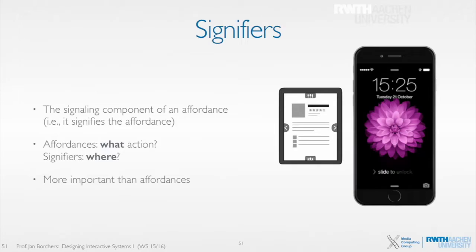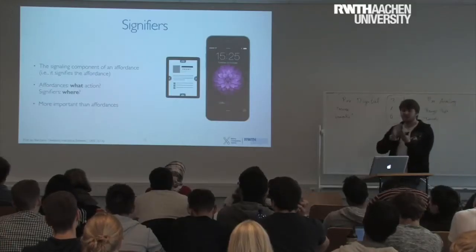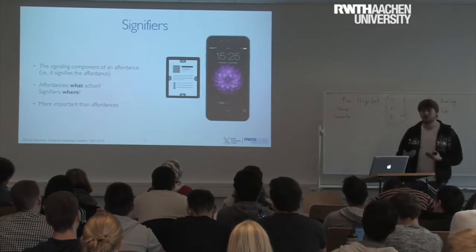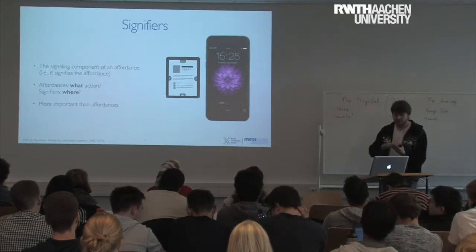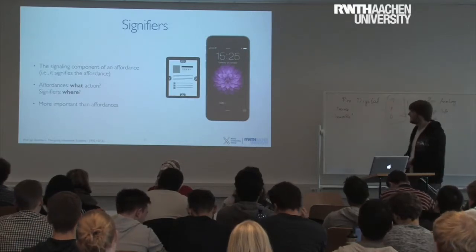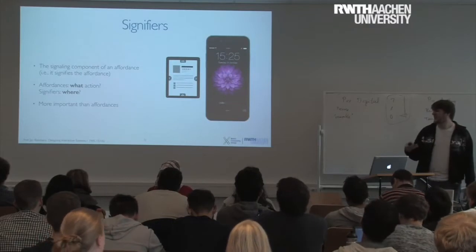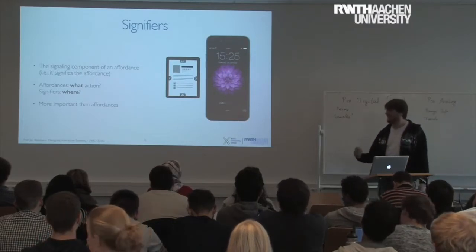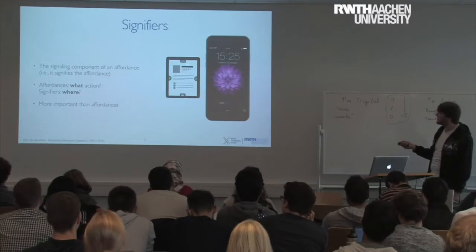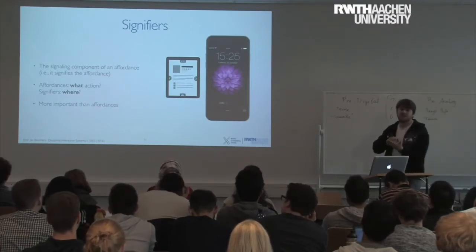For example, if you have a touch screen, from our knowledge we know we can press it, touch it, drag our fingers over it. But it doesn't actually tell us where to do this physically. So we have buttons with arrows that tell us where to interact with the software.